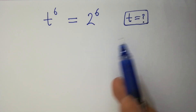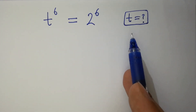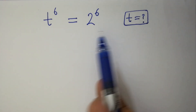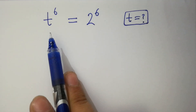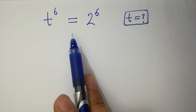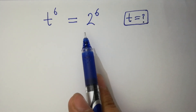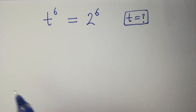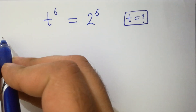Hello friends, find the value of t if t to the power 6 equals 2 to the power 6. Let's have a solution.